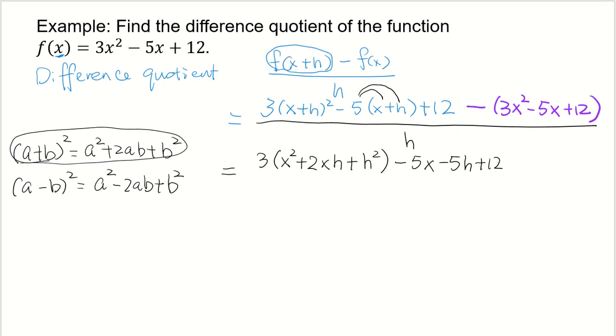All right, then I subtract, distribute this negative sign to each term inside the parentheses: minus 3x squared plus 5x minus 12. And this, everything over h.